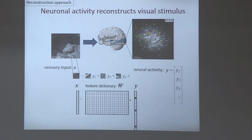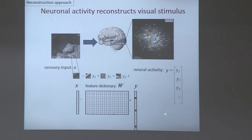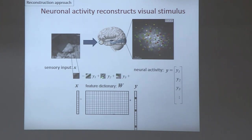In mathematical notation, you reshape the pixel intensities in an image patch into a vector x. It is then a product of the neuronal activity vector — where each component is the firing rate of an individual neuron — multiplied by the dictionary matrix W, where each column is the reshaped pixel intensities of the corresponding feature vectors. It's just like a basis, except it's not orthogonal and is often over-complete.